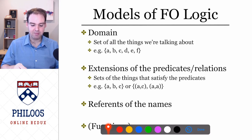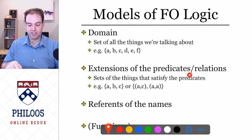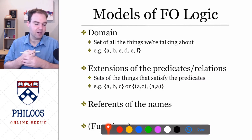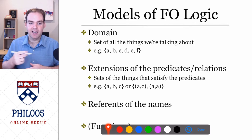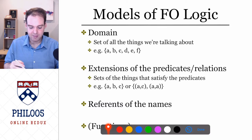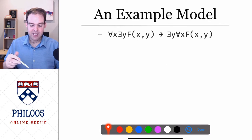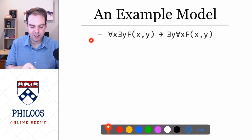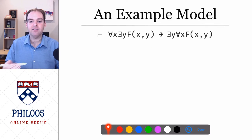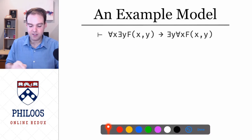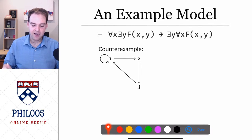So what is a model? The model contains a domain — the stuff that's in the model — and it tells us the extension of the predicates and relations. If there's a property like 'is an apple' or 'x loves y,' the model has to tell us who loves whom. The model also gives us the reference of names. If we have an argument with no premises and want to show it's invalid, all we have to do is find a model that makes the conclusion false. That's enough to show it's not a tautology.